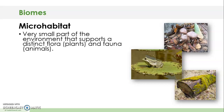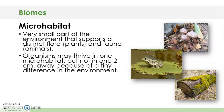A micro habitat is a very small part of the environment that supports a distinct flora — in other words, plants — and fauna — in other words, animals. Some organisms, usually very small ones, may live well and actually thrive in one micro habitat, but just a couple of centimeters away in another micro habitat, they may not be able to survive.